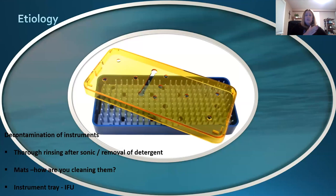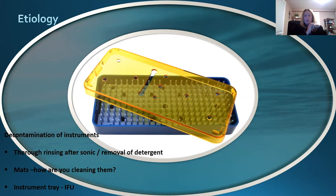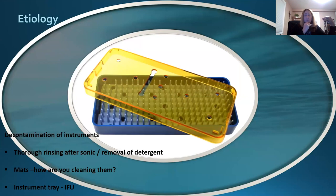Thorough rinsing — not only the cannulas, but all your instruments on your back table get decontaminated regardless of whether they were used or not. If that instrument gets put on your back table, that instrument gets cleaned. Thorough rinsing to remove that detergent — whether you have a large machine that does cleaning, rinsing, and drying together, or you're doing it in a sink — make sure you have the right protocols in place. Rinse, rinse, rinse, rinse — get that detergent off of there.